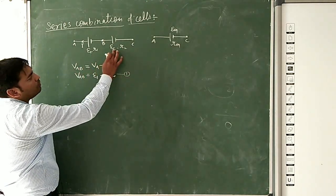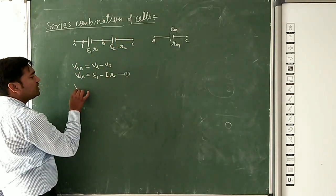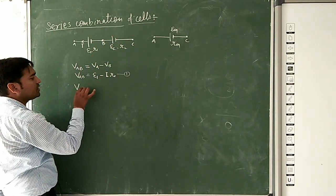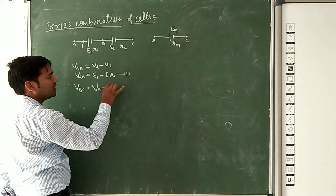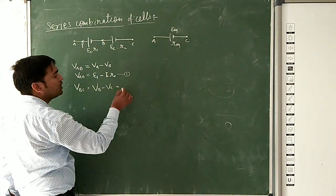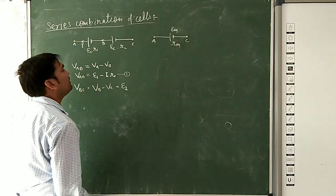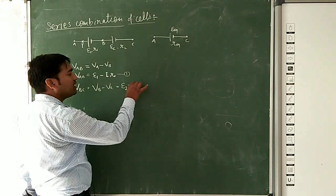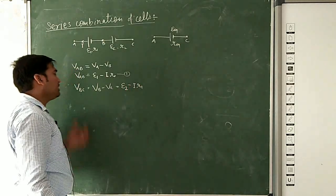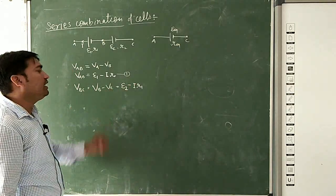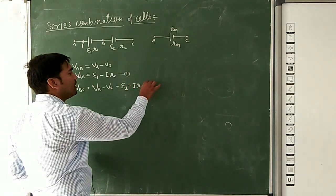Now, the terminal potential difference across points B and C — if we want to find VBC, it will be represented as VB minus VC. This will be EMF E2 minus current I (same for both) into internal resistance R1. The formula is V equals E minus IR. We will call this equation number 2.